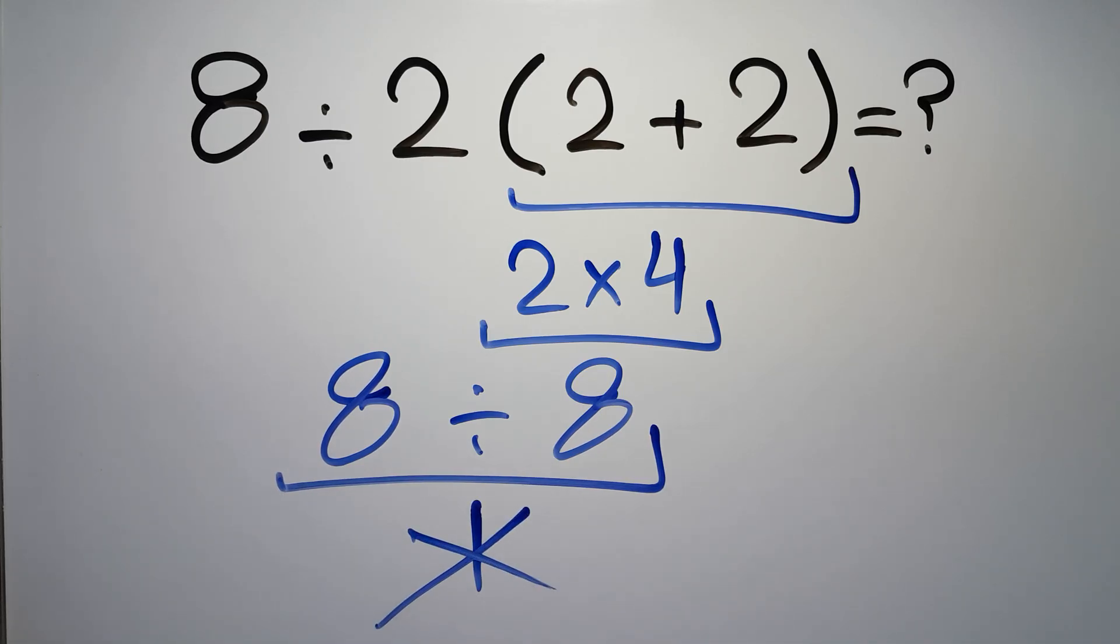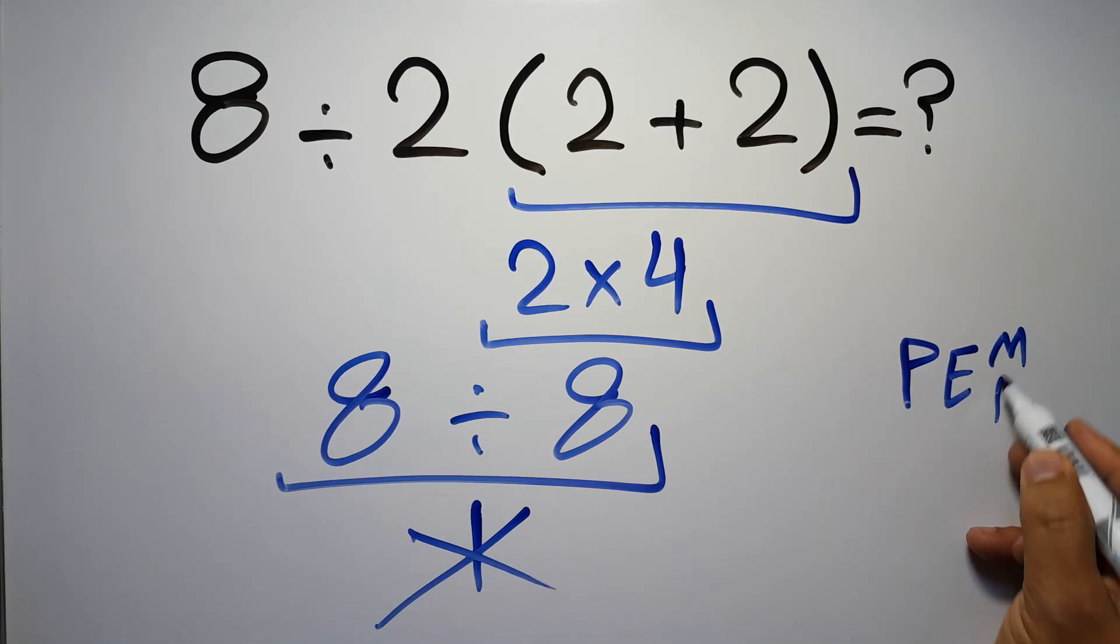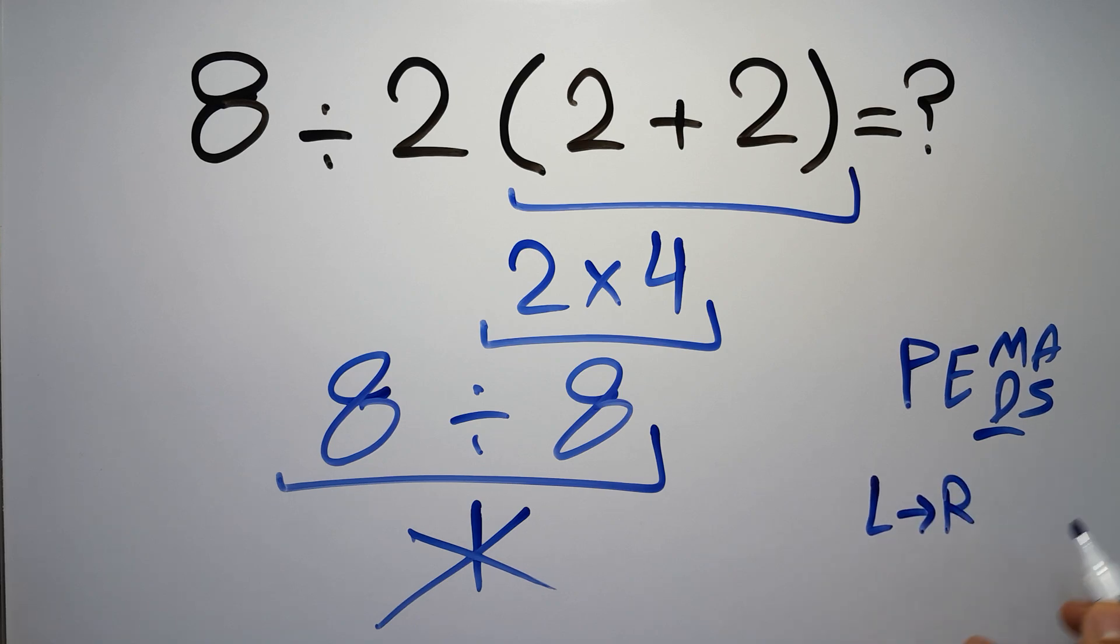Because according to the order of operations, first we have to do parentheses, then exponents, then multiplication or division, and finally addition or subtraction. Remember that multiplication and division have equal priority, and we have to work from left to right. The same applies to addition and subtraction.